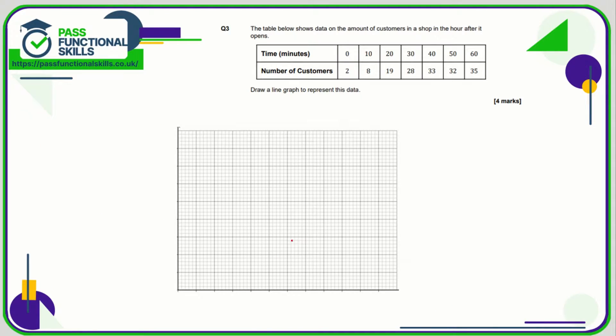For question 3 we need to draw another line graph. We've got time on the top row so that is going to be the horizontal axis, so that is time in minutes. And up the side we have number of customers. The time goes from 0 to 60 so I'm going to go up in 5 minute increments: 5, 10, 15, 20, 25, 30, 40, 50, 60, and that fits perfectly.